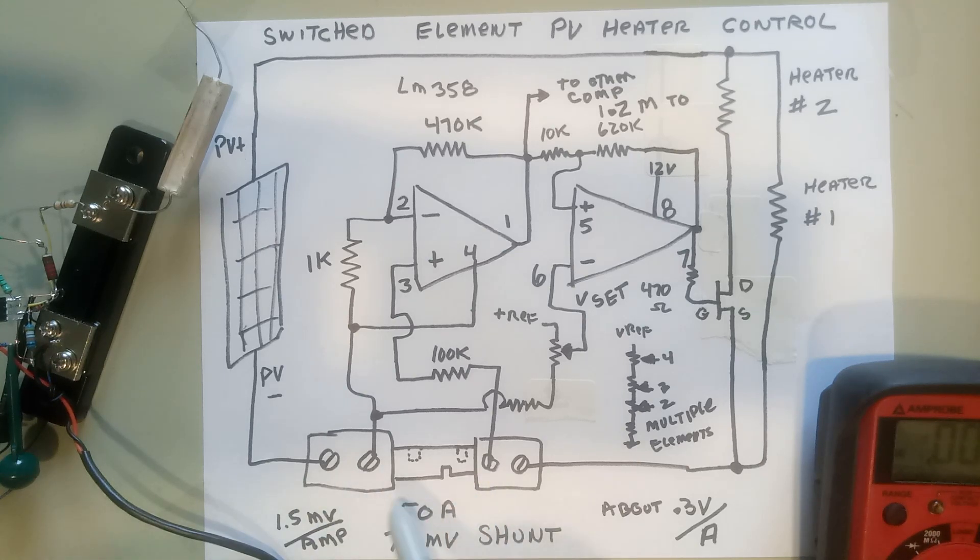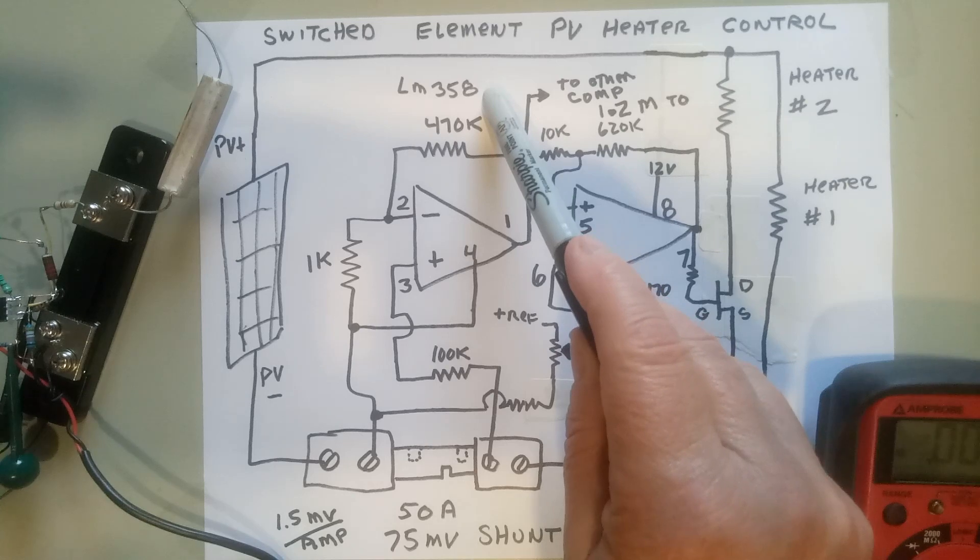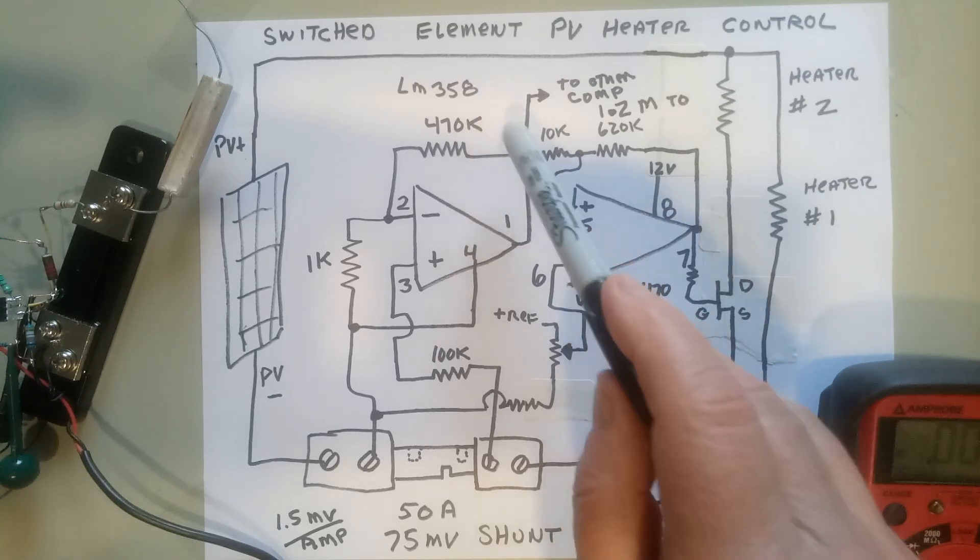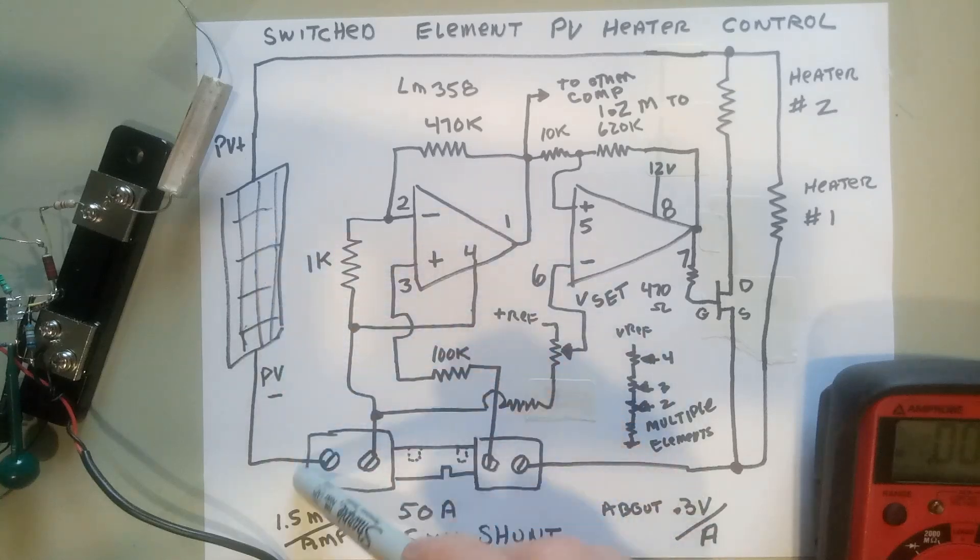It's a basic amplifier circuit using an LM358. This produces a gain and gives you about 0.3 volts per amp. Here's your PV current—comes in this side, goes that side, so this is a positive voltage coming in.